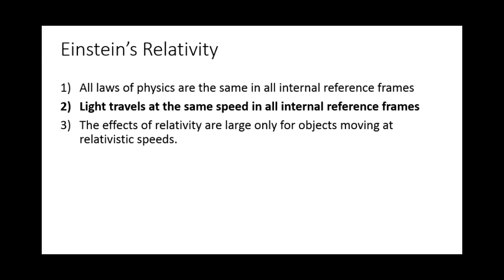And Einstein said it travels at the same speed no matter how you're moving, which is kind of interesting and prevents a few conceptual problems for us. And then the last principle is that the effects of relativity are large only for objects moving at relativistic speeds. And so this is the last thing that makes special relativity really difficult for us is that we as humans really have no concept of relativistic speeds, things approaching the speed of light. And so we've got to use math to try and understand the effects of moving at those speeds.